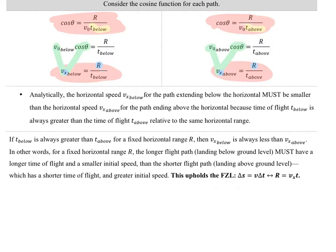We have these statements here. Horizontal speed for the travel below, when it misses ground level on the low end, has got to be smaller than that above because of the time of flight relationship. One way to look at the range equation is it has to be the X speed times time. It's a horizontal distance. It's a straight line distance. Distance equals rate times time. First zeroth law.